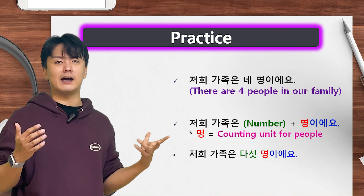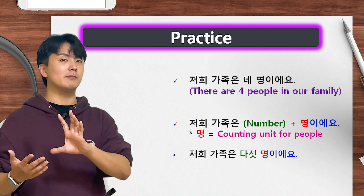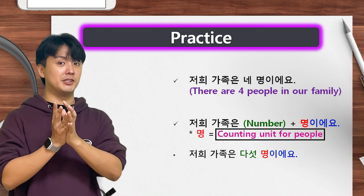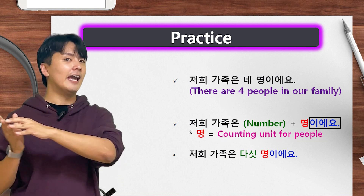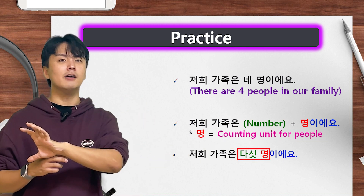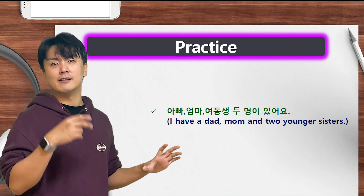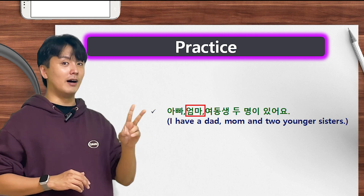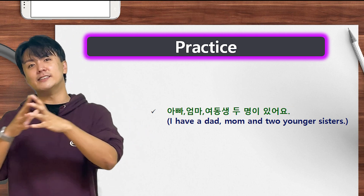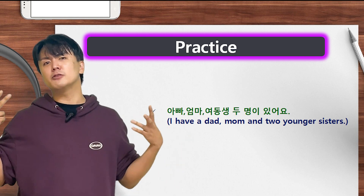I have four members in my family — 저희 가족은 네 명이에요. 저희 가족은 means 'our family,' and 명 is the unit for counting people. So the pattern is 저희 가족은 [number] 명이에요. If there are five people, say 저희 가족은 다섯 명이에요. For family members: I have a dad — 아빠, a mom — 엄마, and two little sisters — 여동생 두 명이 있어요. The pattern is [family member] [number] 명이 있어요.